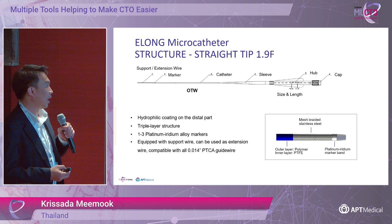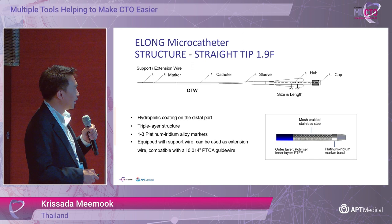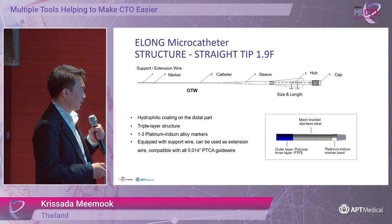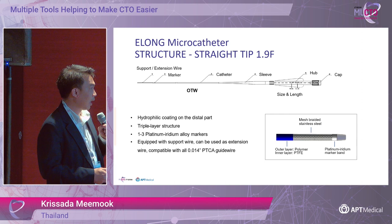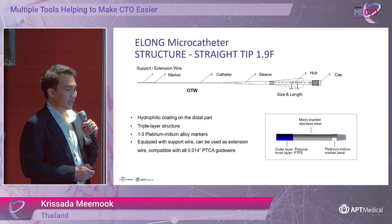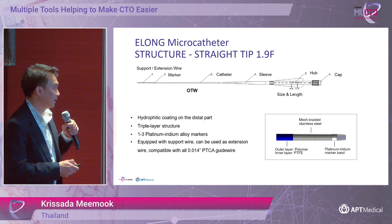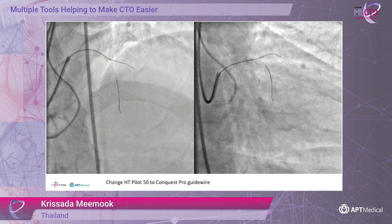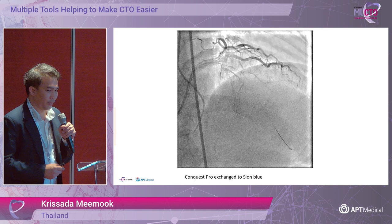The ELONG microcatheter comes in two sizes: 1.7 and 1.9 French. It has a step-tip design with a three-rail structure, and for the coronary artery version there is one marker. You can put a standard 0.014-inch guidewire inside. Importantly, it functions as a support/extension catheter, which is very useful for wire exchange. After that, we could not advance the Pilot 50 far enough and changed to the Confianza Pro guidewire, trying to navigate to the distal true lumen. However, the Confianza Pro kept going into the diagonal branch, so we de-escalated back to the Pilot 50.